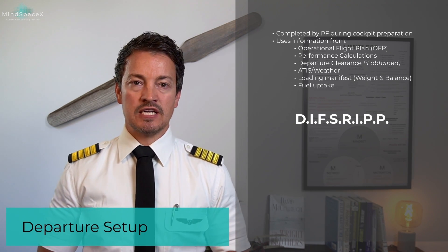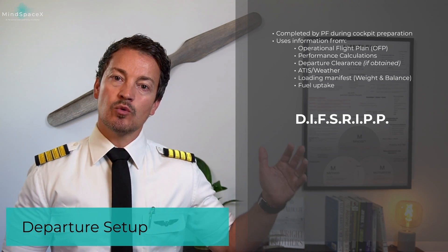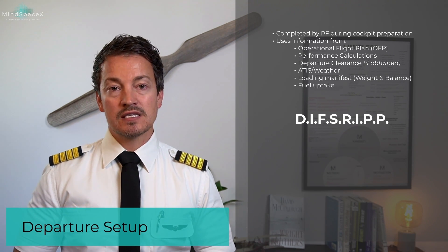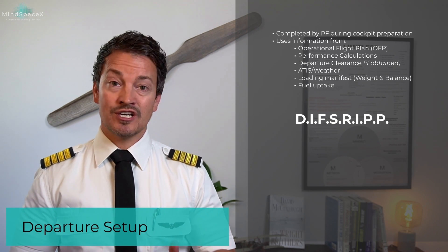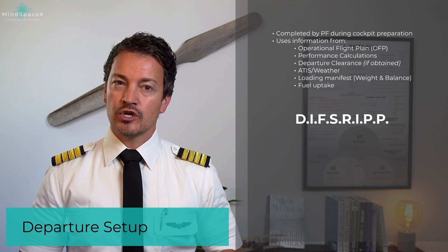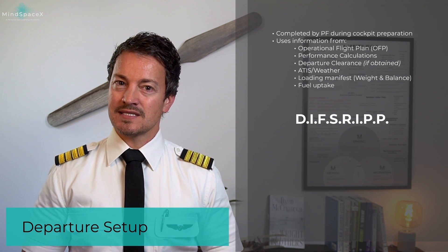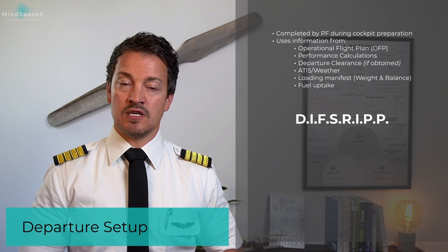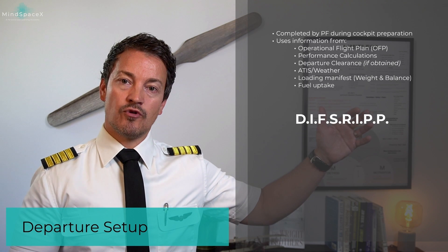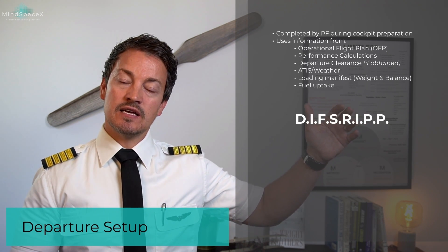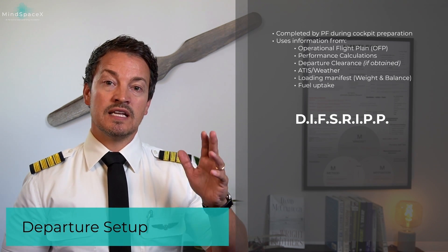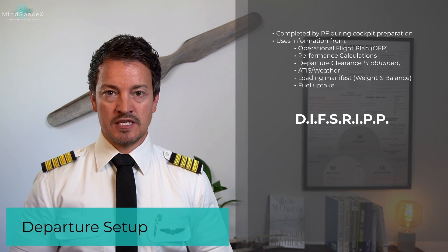Each letter represents a page, and this is the sequence in which we set up everything, because the information you put into one page does tie together to the next one. For example, we couldn't set up the secondary flight plan without setting up the primary flight plan. And we cannot set up the performance in Init B — which is fuel prediction — before we have the initial part of the information set.